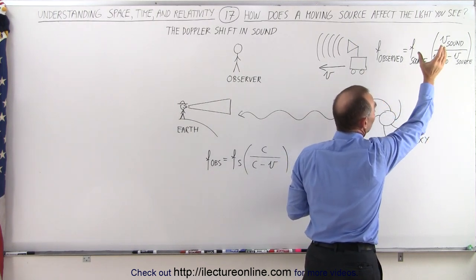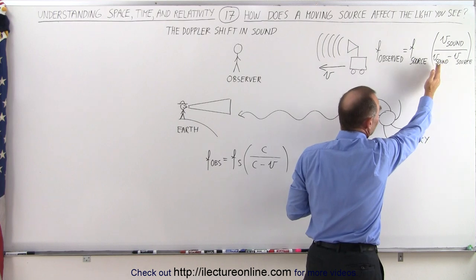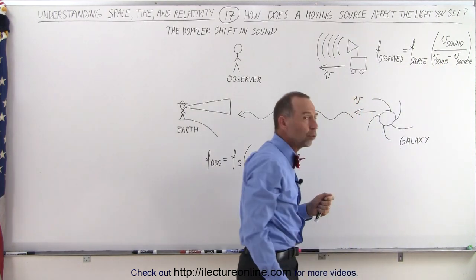The velocity of the sound in air divided by the velocity of the sound minus the velocity of the source.